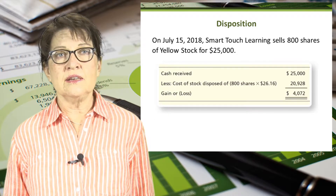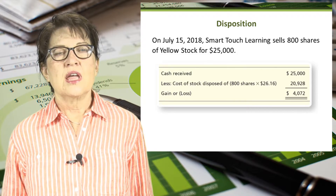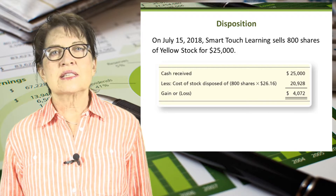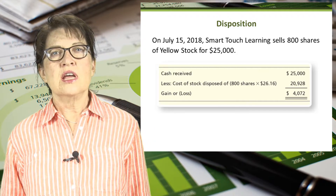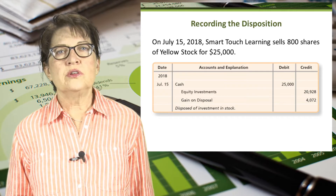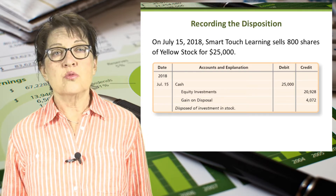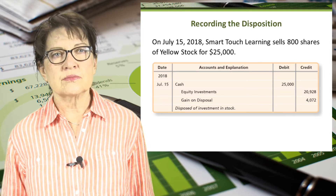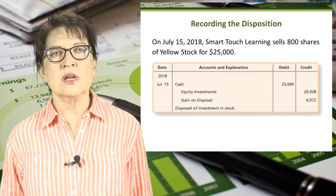On July 15, 2018, Smart Touch Learning sells 800 shares of Yellow stock for $25,000. The gain of $4,072 is calculated by taking the cash received of $25,000 less the cost to Smart Touch of the 800 shares. 800 times $26.16 is $20,928. So the difference between the $25,000 and the $20,928 is the gain. To record the disposition, cash is debited for $25,000. Equity investments is credited for the cost of $20,928. And gain on disposal is credited for $4,072. The gain on disposal is a temporary account and is reported in the other income and expenses section of the income statement.